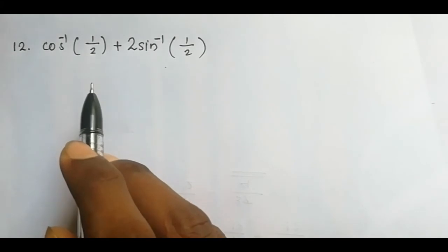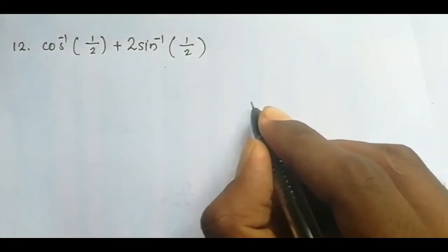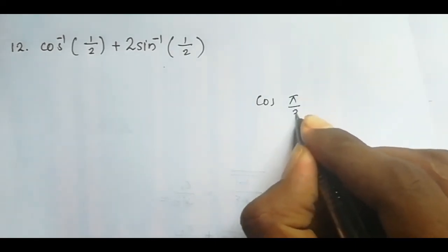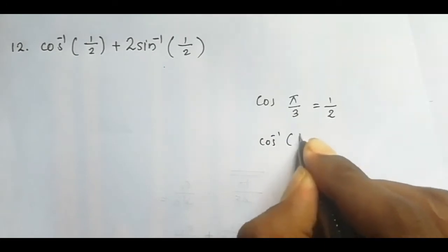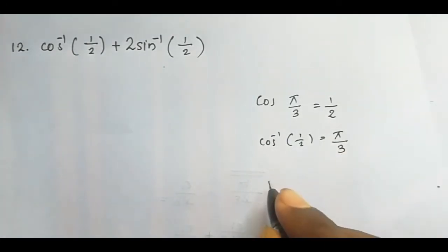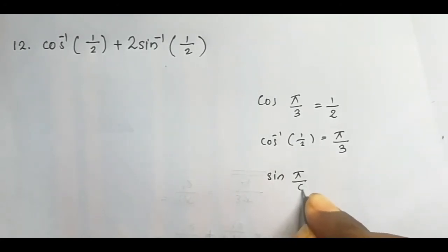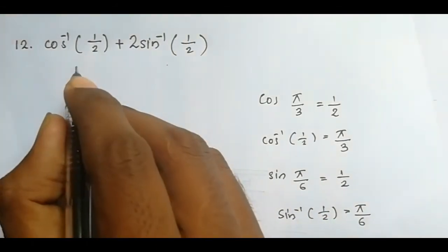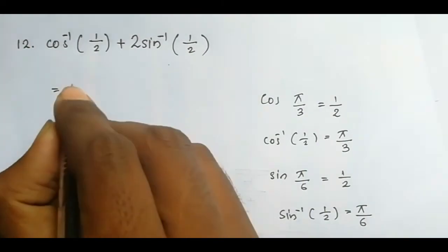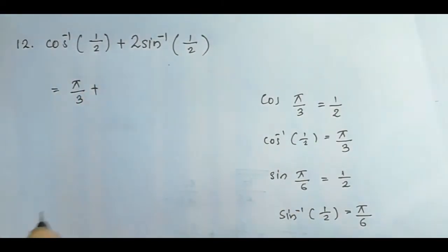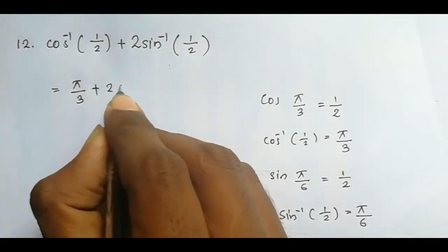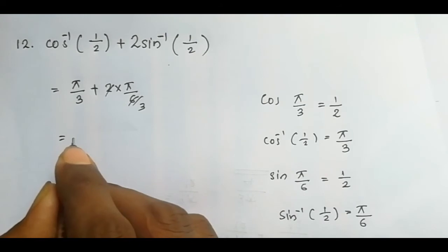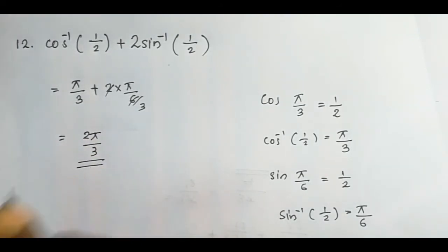Question 2: cos⁻¹(1/2) + 2sin⁻¹(1/2). Since cos(π/3) = 1/2, cos⁻¹(1/2) = π/3. Since sin(π/6) = 1/2, sin⁻¹(1/2) = π/6. So the expression becomes π/3 + 2×(π/6) = π/3 + π/3 = 2π/3. The answer is 2π/3.